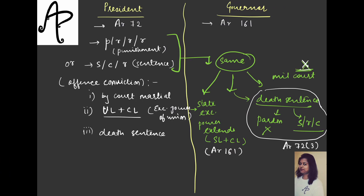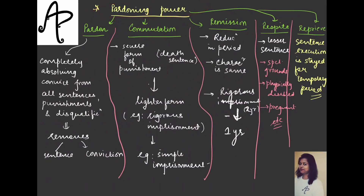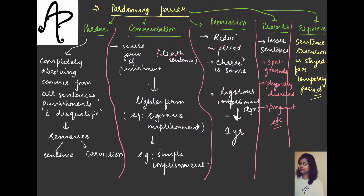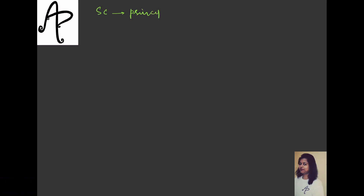Now let's also note some Supreme Court guidelines. The nature of the pardoning power — this permission given to the President — is basically executive in nature. It is not the judiciary's work; judicial actions are not involved here. The President is not acting as a court of appeal in this context.